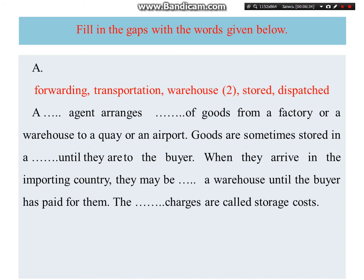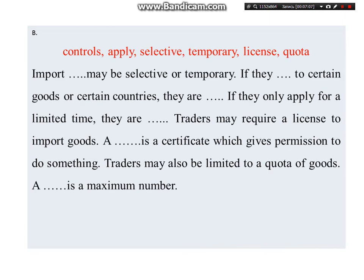The next activity is filling the gaps with the words given below. You can see words including: forging, transportation, warehouse, store, and dispatch. Using these words you should complete the given text. This is a continuation of the task with the additional words: controlled, apply, selected, temporary, license, quota. You should complete this text.